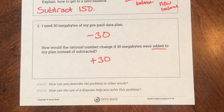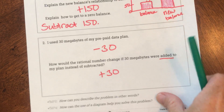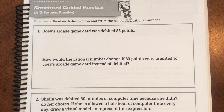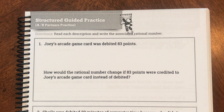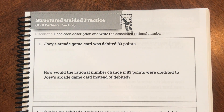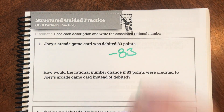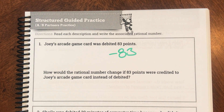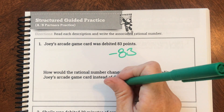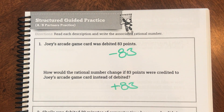We're going to try some of these together on page 156. Our first problem: Joey's arcade game was debited 83 points. A debit is a negative — it's a takeaway — so that would be negative 83. How would the rational number change if 83 points were credited to Joey's arcade game instead? A credit is a positive, so that would be positive 83.